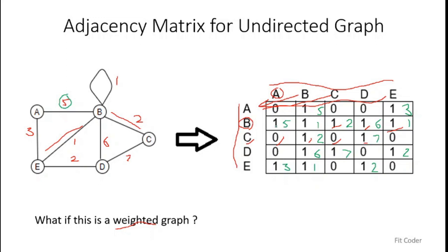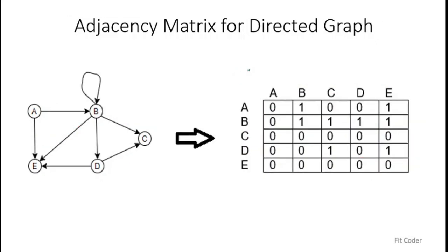Now let's say this is a directed graph — how will things change? The only difference is that in a directed graph, the edge A to B means the edge goes from A to B, so we put 1 for A to B but 0 for B to A. Similarly, for B to C we put 1 but C to B is 0. D to C is 1 but C to D is 0, since there is no edge in that direction. So you just have to consider the direction of the edge to draw the adjacency matrix for a directed graph.